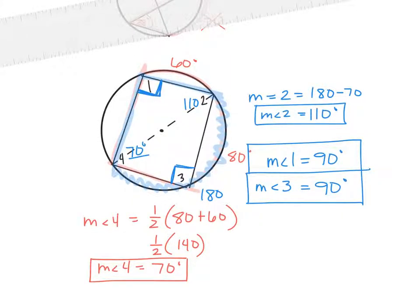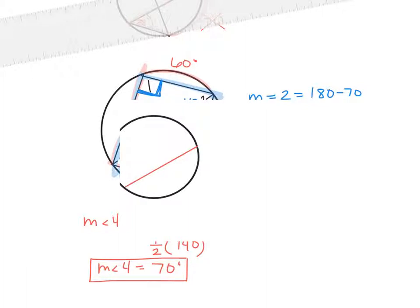We're going to do inscribed angles. An inscribed angle is when the angle has a vertex on the circle. So like this — your vertex is here on the circle. We would call this angle right here an inscribed angle because the vertex is on the circle.